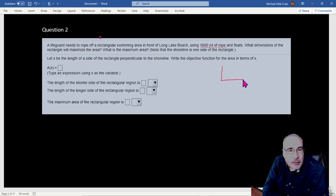So the first thing is noticing that the shoreline is one side of the rectangle. So we don't need any rope for the shore. That makes sense, right? So we really only need three sides.